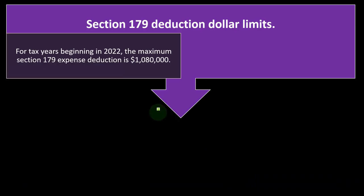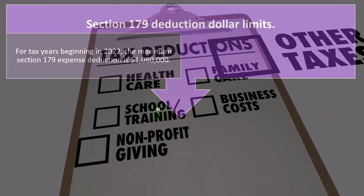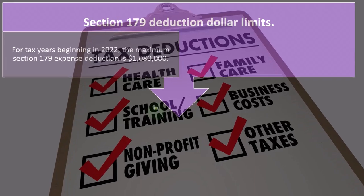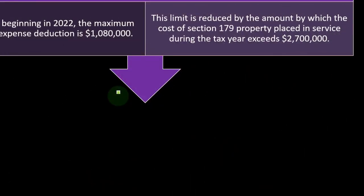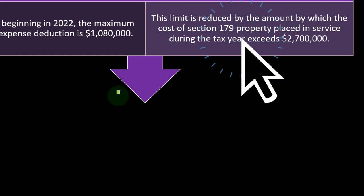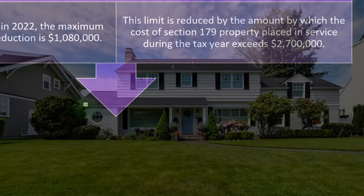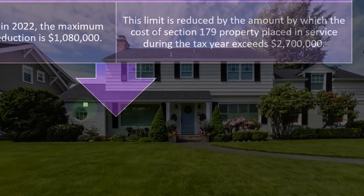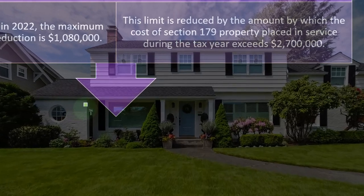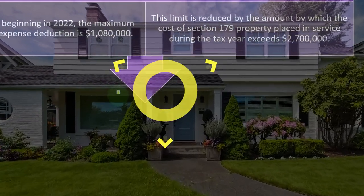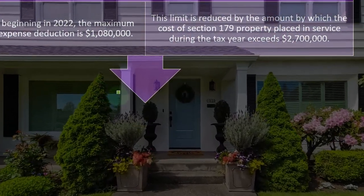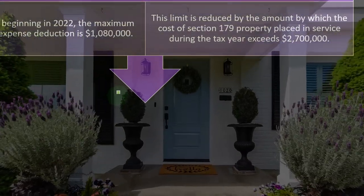Section 179 deduction dollar limits: for tax years beginning in 2022, the maximum Section 179 expense deduction is $1,080,000. This limit is reduced by the amount by which the cost of Section 179 property placed in service during the tax year exceeds $2,700,000. Section 179 deals with depreciable property and whether you can get more depreciation in the first year the property is placed in service, rather than allocating the cost over its useful life.